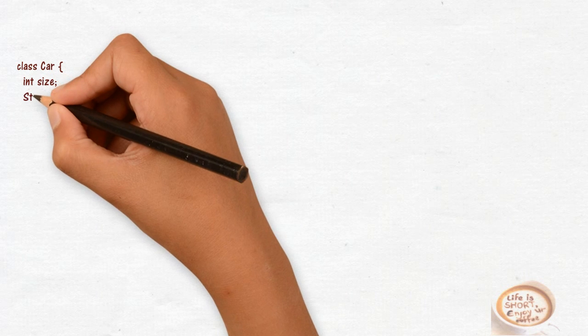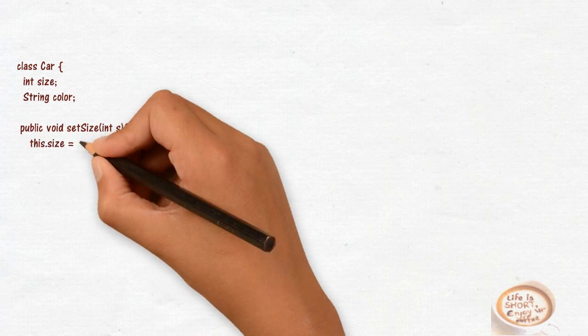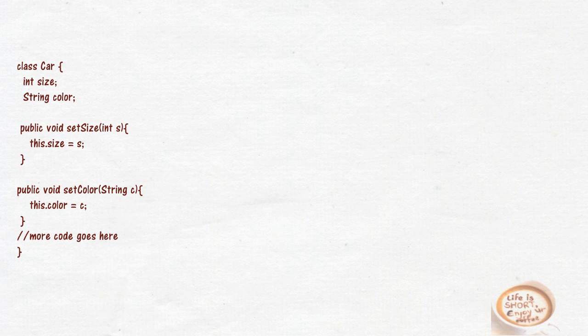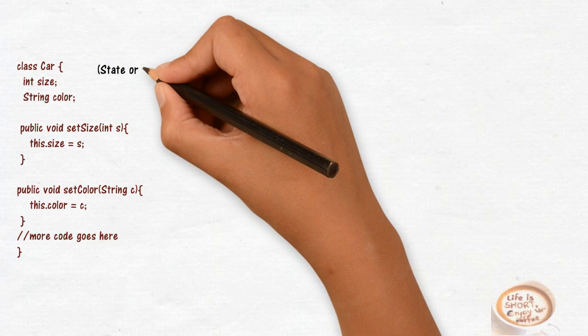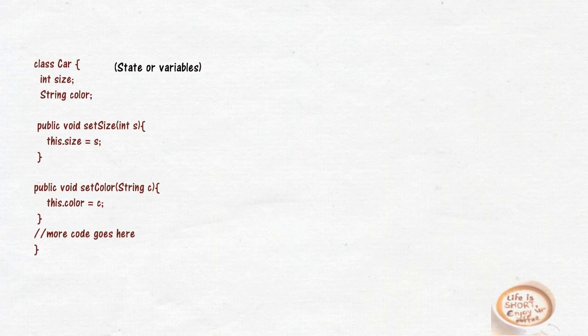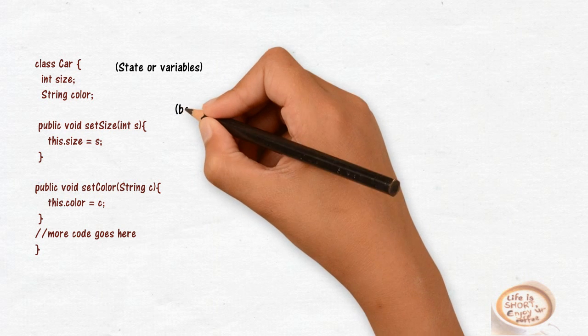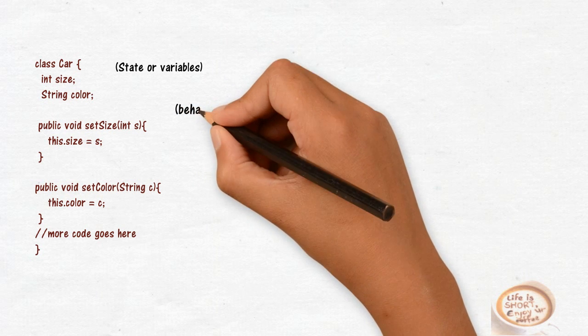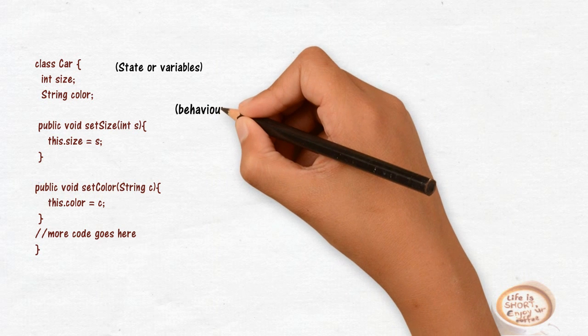Let's take a quick view in programming. I am going to create a class car and I will create two attributes or state of this car object: size and color. And set size and set color will serve as a method or its behavior.